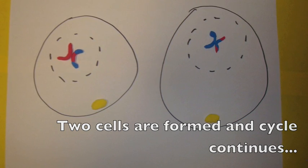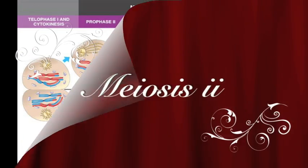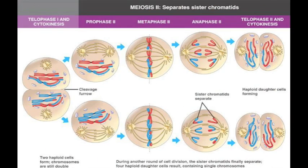At the end of meiosis I, each chromosome still has two chromatids. So going through meiosis II will reduce the amount of DNA back to normal.